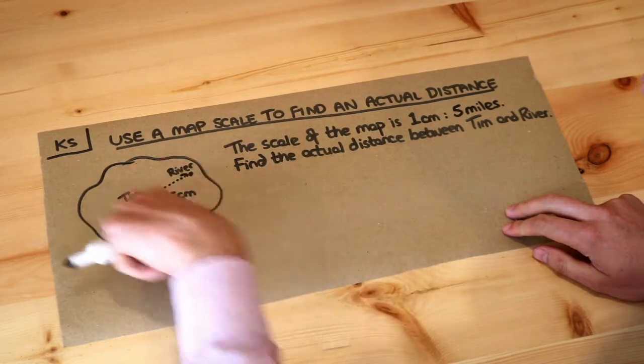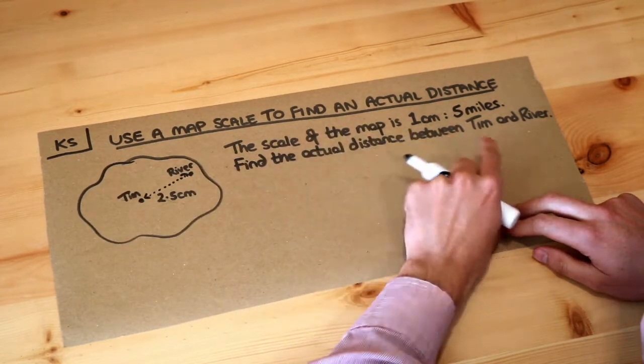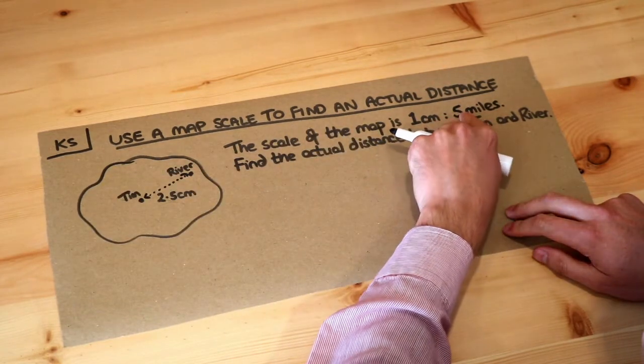So in this particular question you've got some map here and it says the scale of the map is one centimeter to five miles.